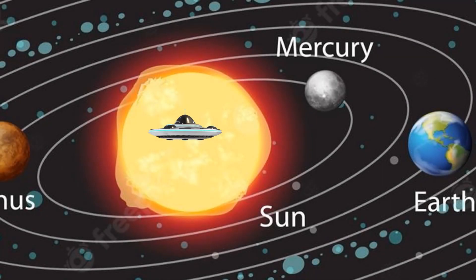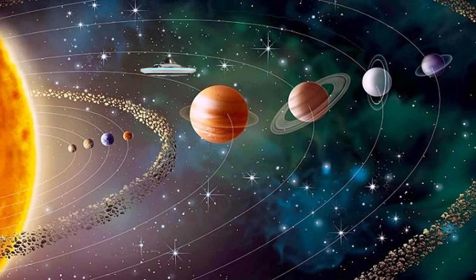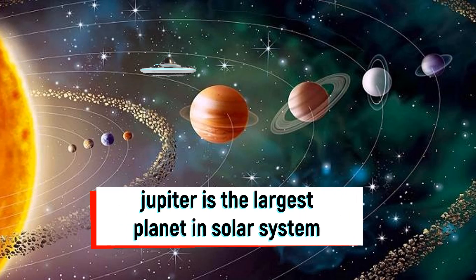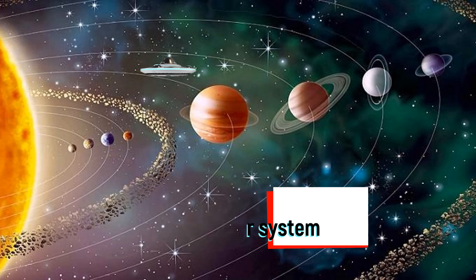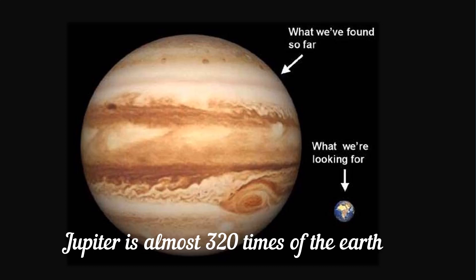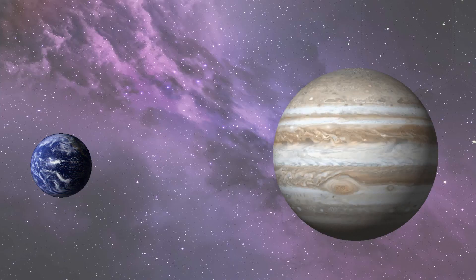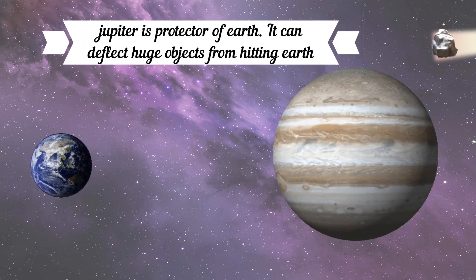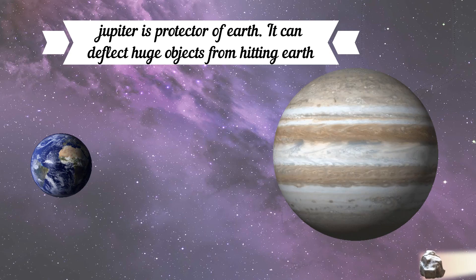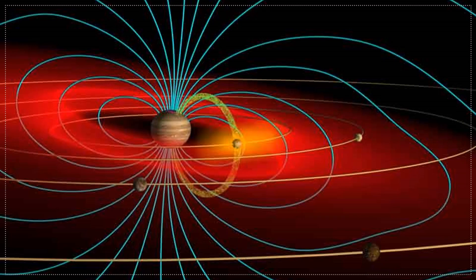Our next destination is the fifth planet from the Sun, Jupiter. Jupiter is the largest planet in the solar system. Jupiter is almost 320 times that of Earth and is twice the amount of all the planets in the solar system. Jupiter is said to be the protector of Earth as it is able to deflect huge objects such as asteroids from hitting Earth with its strong gravity.